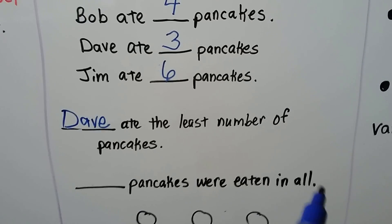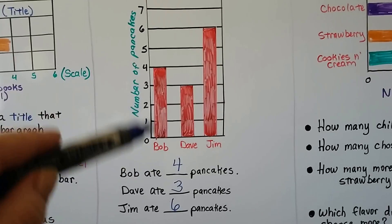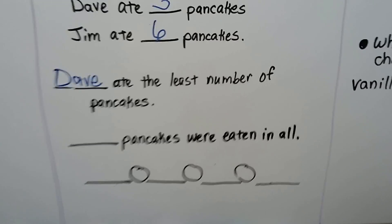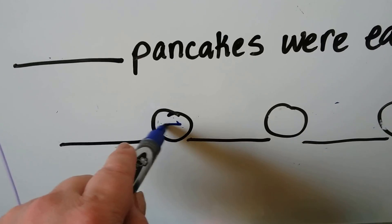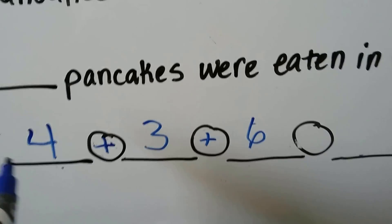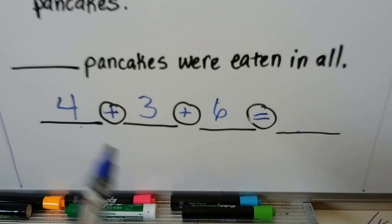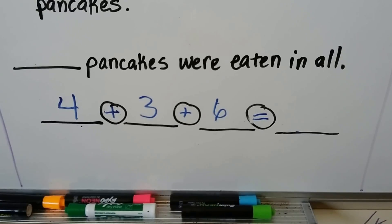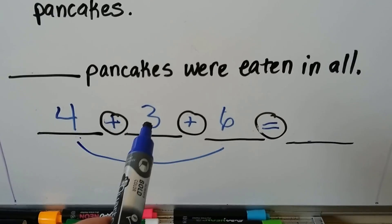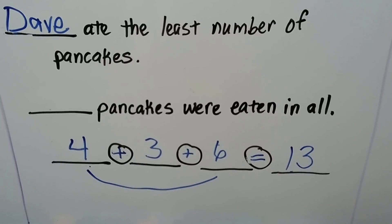Blank pancakes were eaten in all. We take the number of pancakes eaten. There was a four, a three, and a six that were eaten. Because it says in all, we know it's going to be addition. We need to add four, three, plus six. Do you see the two compatible numbers that we can add first? We can add the four and the six together because they make a ten. Then we can add the three. Ten, eleven, twelve, thirteen. How many pancakes were eaten in all? Thirteen.